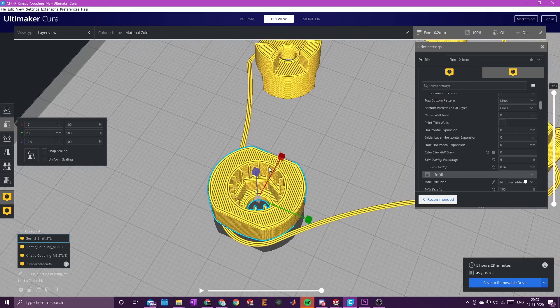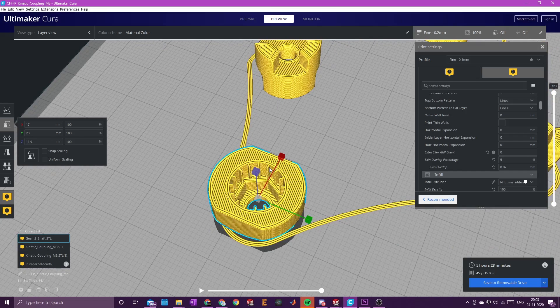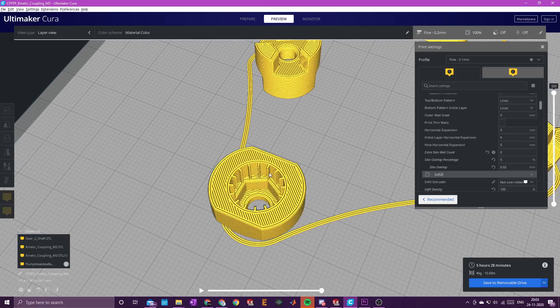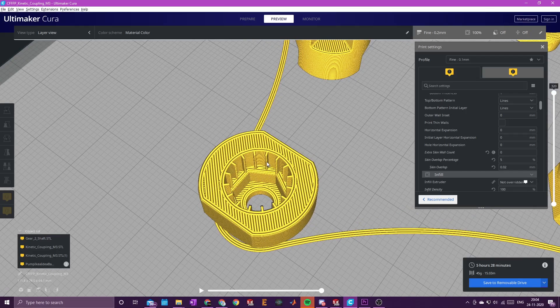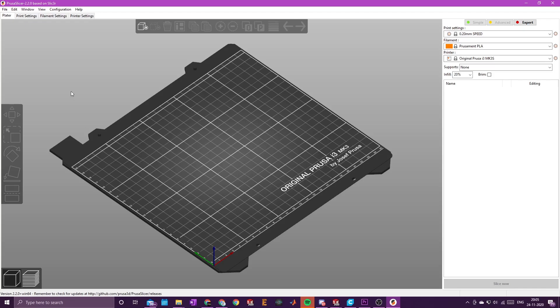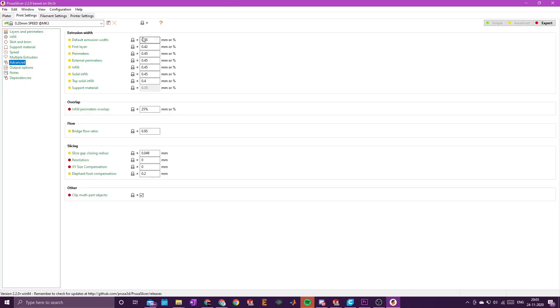In Prusa slicer, these features are so small that sometimes the minimum feature width is set to 0.45, which basically omits these features from being sliced altogether. You need to set your minimum feature width to 0.4 in the Prusa slicer. You go to print settings, then advanced, and these settings are basically larger than my 0.42mm that I drew into CAD. Set those to 0.4 and then that part will slice correctly.